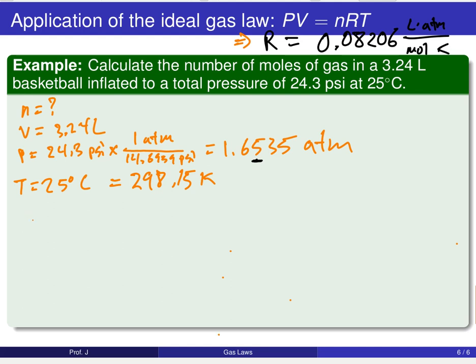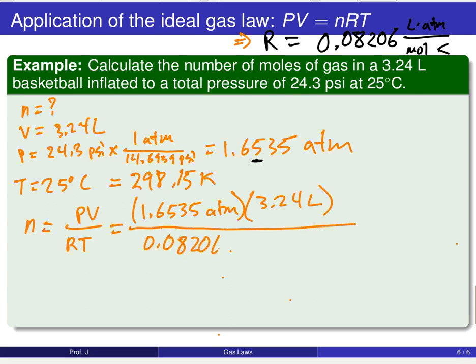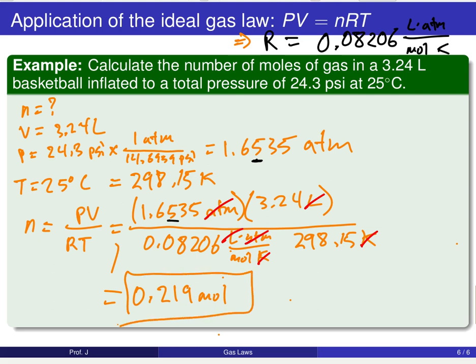So now we can go ahead and solve PV equals nRT for n. So n is going to be equal to PV over RT. Plug in our known values, 1.6535 atm. Volume is 3.24 liters. R is 0.08206 liters atmosphere per mole Kelvin. And finally, our temperature is 298.15 Kelvin. So we'll have our three sig figs at the end of the day. Watch our units. ATM cancels out. Liters cancels out. And Kelvin cancels out. 1 over moles in the denominator moves that moles up to the numerator. And we arrive at our final answer of 0.219 moles.